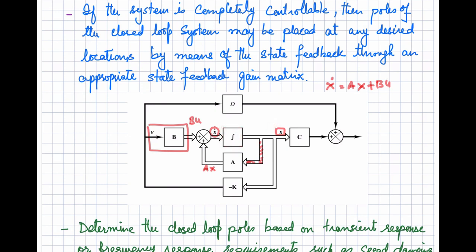The output equation in state space is Y = CX + DU. At this point the input is X, so the output will be C into X. This is fed to the summer, and here we have D into U — this block multiplies U with D. Finally we have Y = CX + DU.